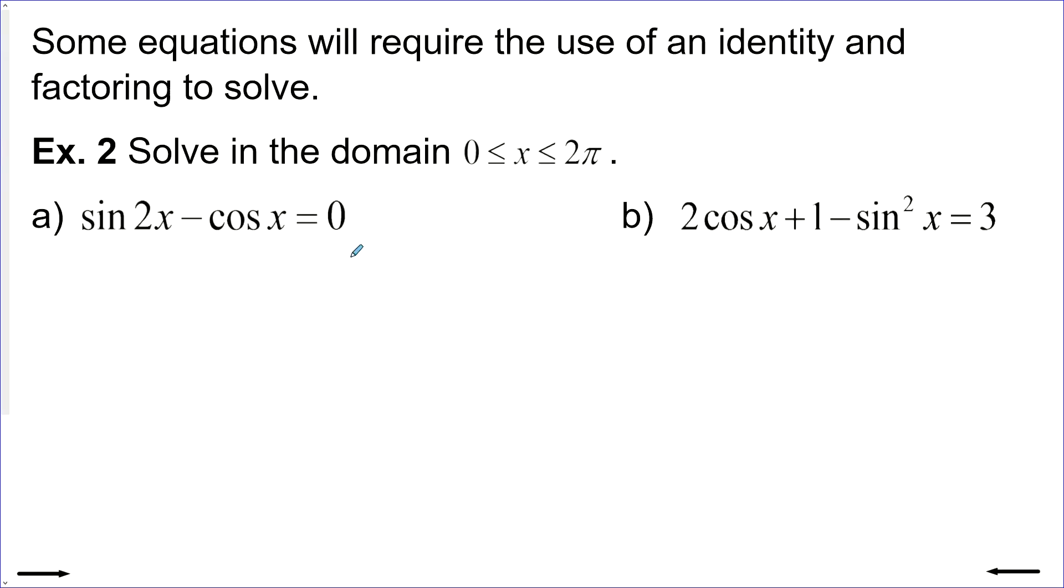We've done trigonometric equations like that before. Now let's look at some where we may have to use identities or factoring to help us solve them. This first one is a good example. Sine 2x minus cos x equals zero.